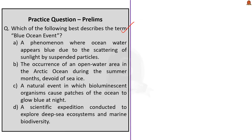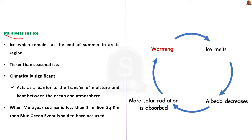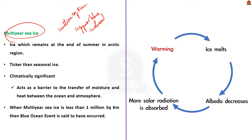This question asks you to find which of the following best describes the term 'Blue Ocean Event.' The correct answer is: the occurrence of an open water area in the Arctic Ocean during the summer months, devoid of sea ice. The Blue Ocean Event usually occurs when the area of multi-year sea ice falls below 1 million square kilometers. During such a phenomenon, the Arctic will appear blue instead of its characteristic white color due to the lack of ice.